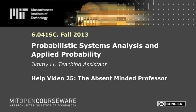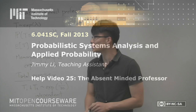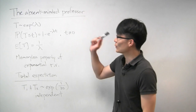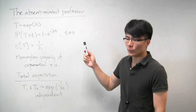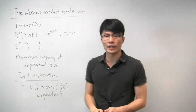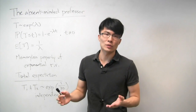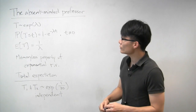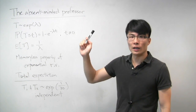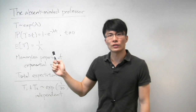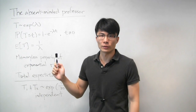In this problem, we have an absent-minded professor who will inadvertently give us some practice with exponential random variables. The professor has made two appointments with two students and inadvertently made them at the same time. We model the duration of these appointments with an exponential random variable.